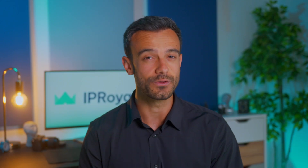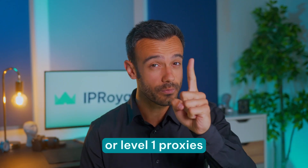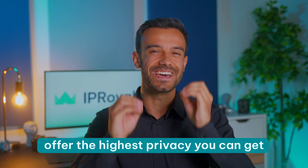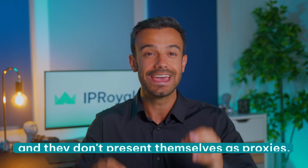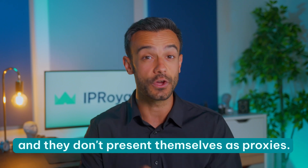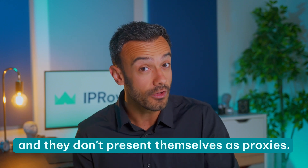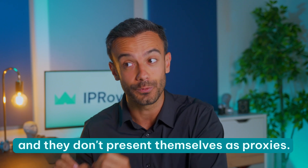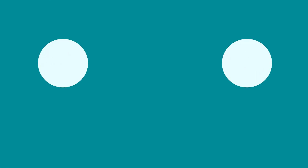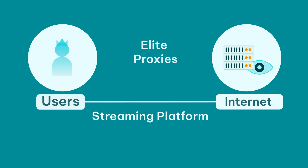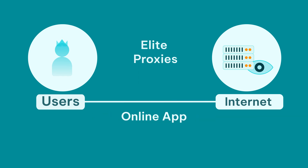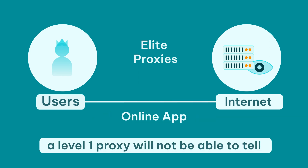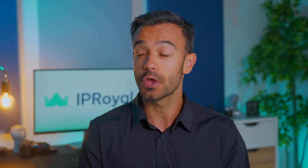Elite proxies, or level 1 proxies, offer the highest privacy you can get and they don't present themselves as proxies. In other words, a website, streaming platform, video game, or online app you access with a level 1 proxy will not be able to tell you're using one.